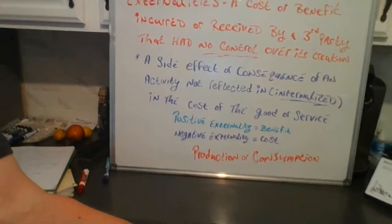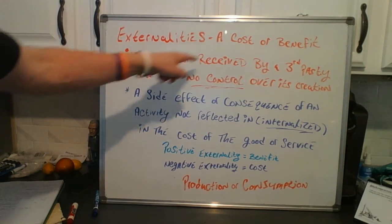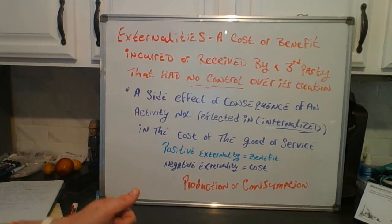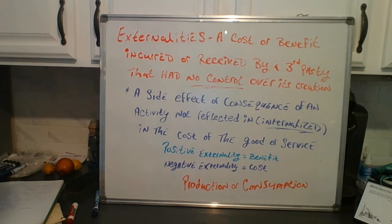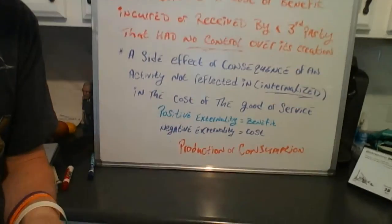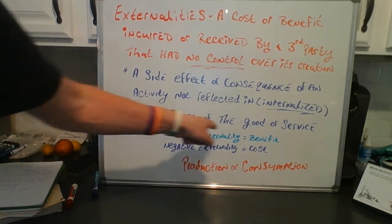Let's talk externalities. I didn't love the definition in the book — they were fine talking about positive versus negative but didn't really say what an externality is. From Investopedia, which is my go-to site: an externality is a cost or benefit incurred or received by a third party that had no control over its creation. They didn't buy anything, they didn't produce anything, but they're still having some impact on them in terms of a cost or benefit.